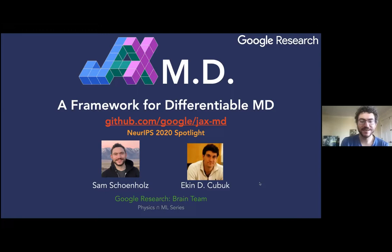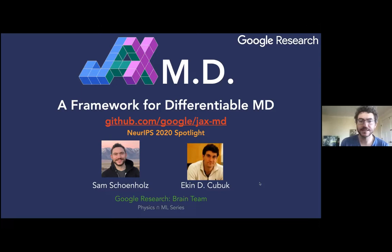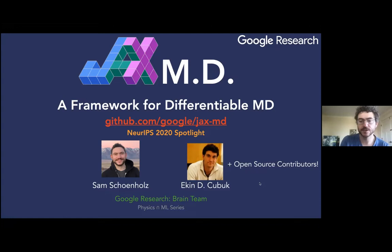Thanks for having me. It's great to see you — it's been like six or seven years at this point. I'm happy to talk today about some work we've been doing over the past two years or so, developing this software library called JaxMD, which is a framework for differentiable molecular dynamics. This work is in collaboration with my friend Dosh at Google, but also a growing list of open source contributors who've been adding some nice features to the library.